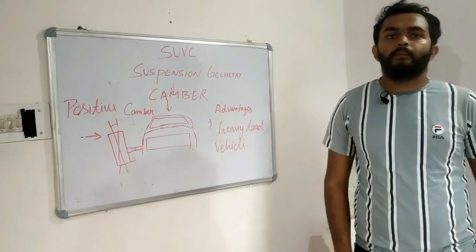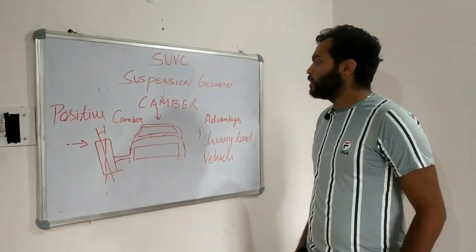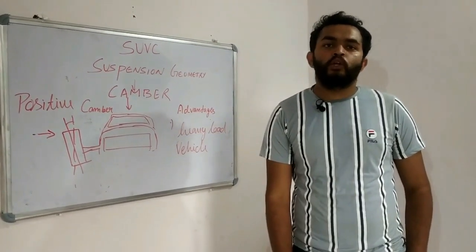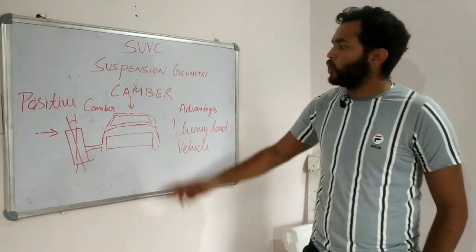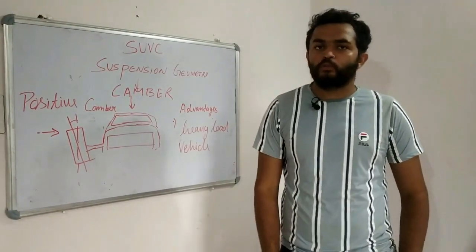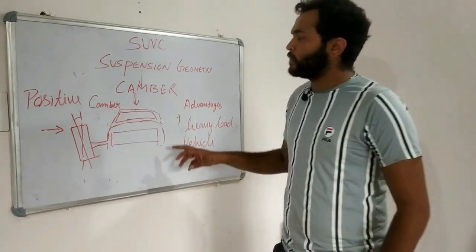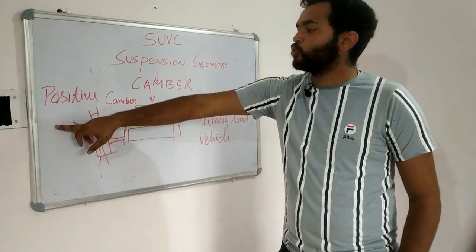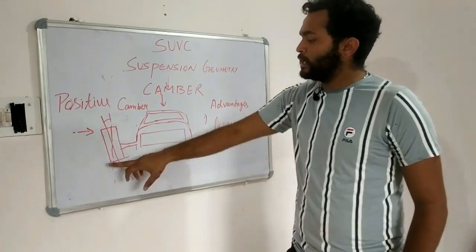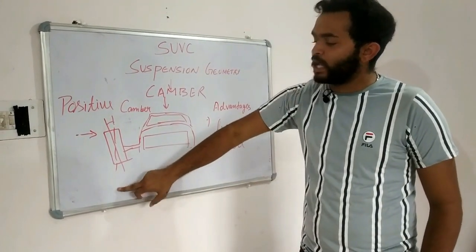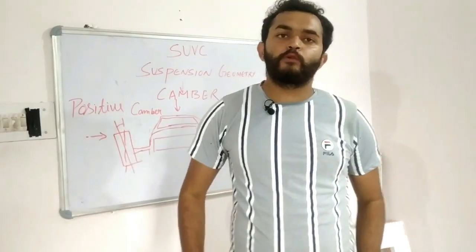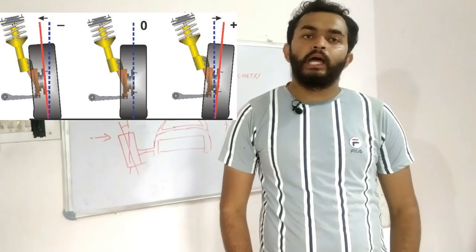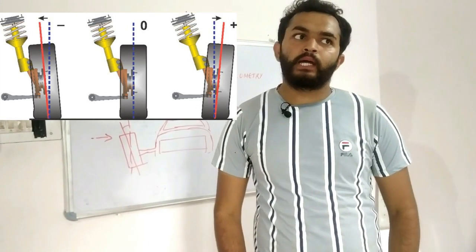The second type of Camber Angle is positive Camber Angle. Its main advantage is that it is used in heavy load vehicles. If my chassis load is more, my tire is comfortable in an inward direction to balance the contact patch. Heavy load vehicles can use positive Camber Angle as well as negative Camber Angle.